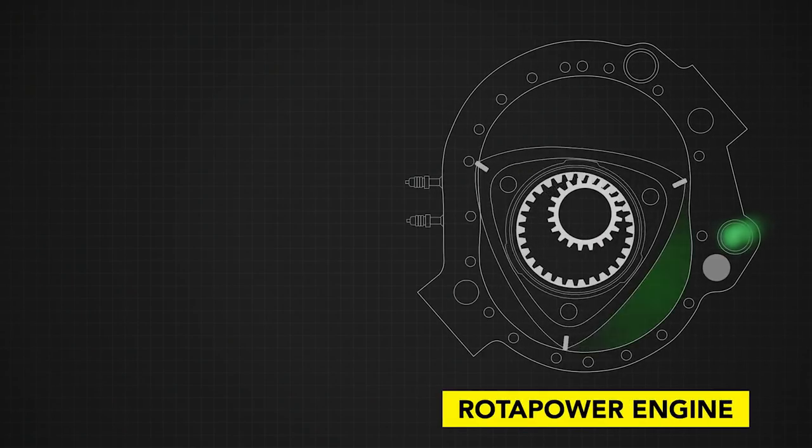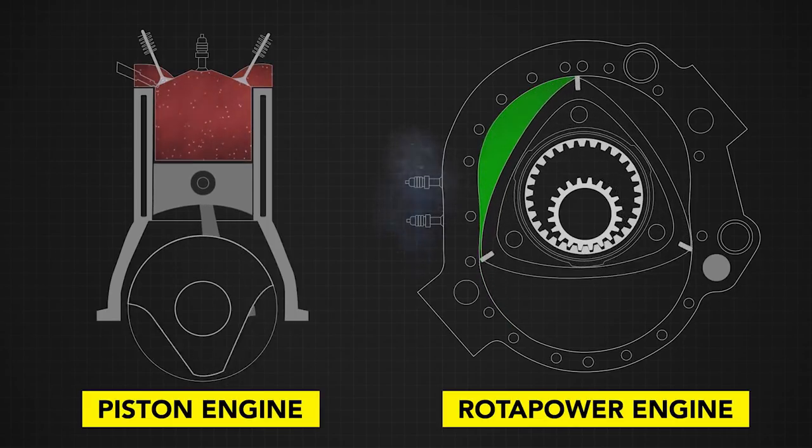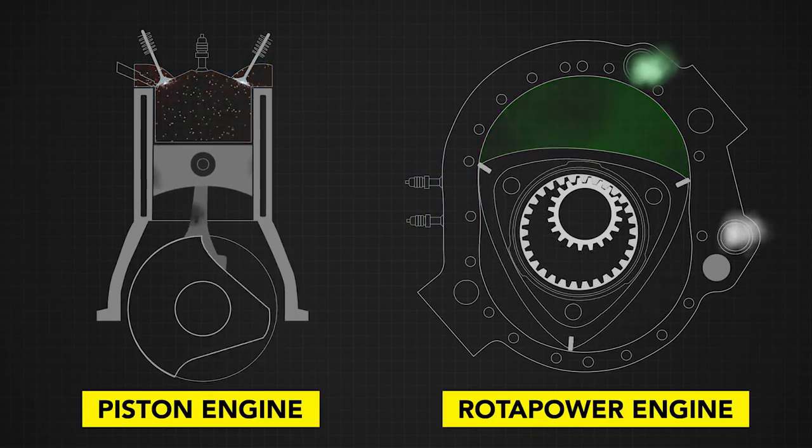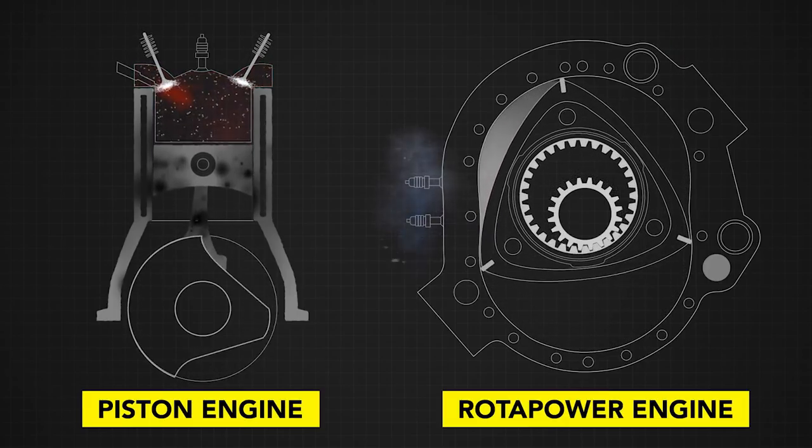Paul's engine only has two moving parts, where a normal piston engine would have over 30. And it doesn't have a traditional lubrication system, which means no sulfuric acid. And there aren't any valves for the siloxane to gather on.